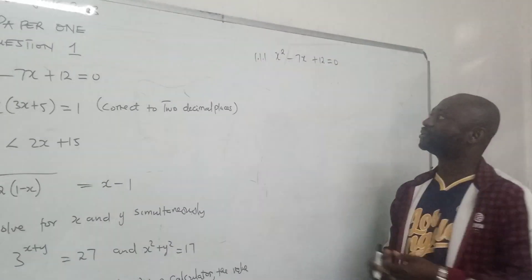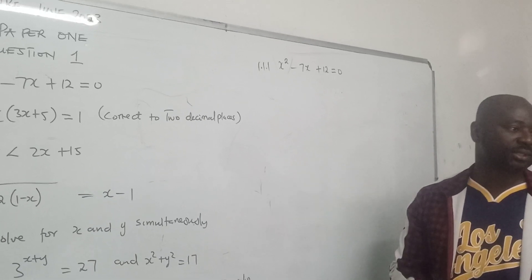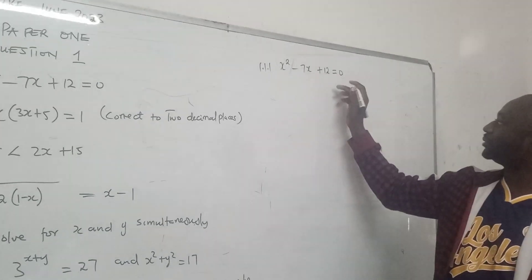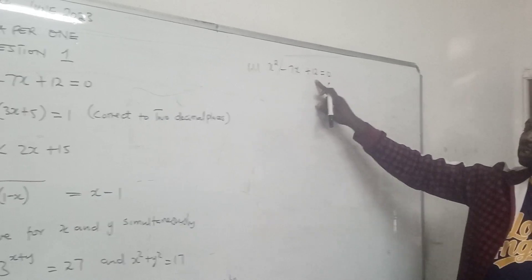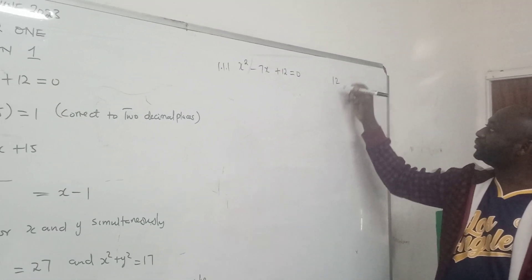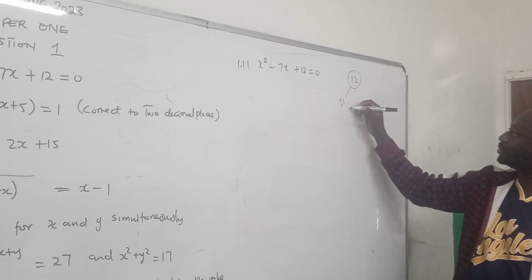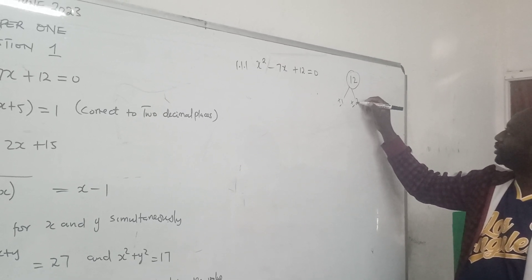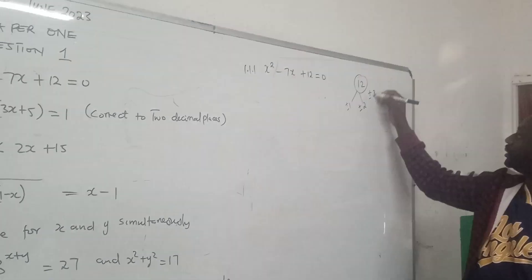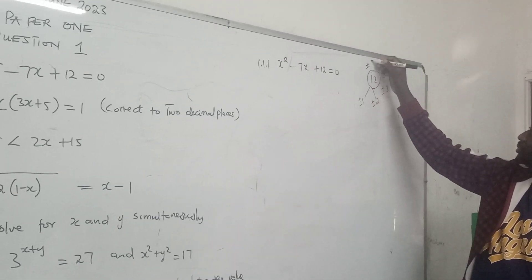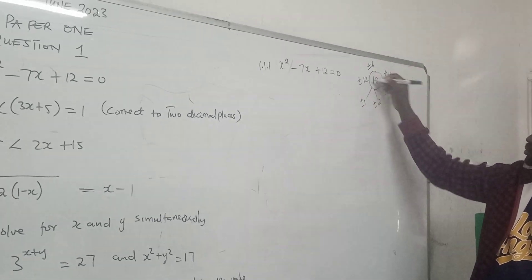This is algebra, so you just factorize and then you solve for x. When you are going to factorize, you take the last term which is 12, find factors of 12. Factors of 12 is plus or minus 1, plus or minus 2, plus or minus 3, plus or minus 4, plus or minus 6, plus or minus 12.